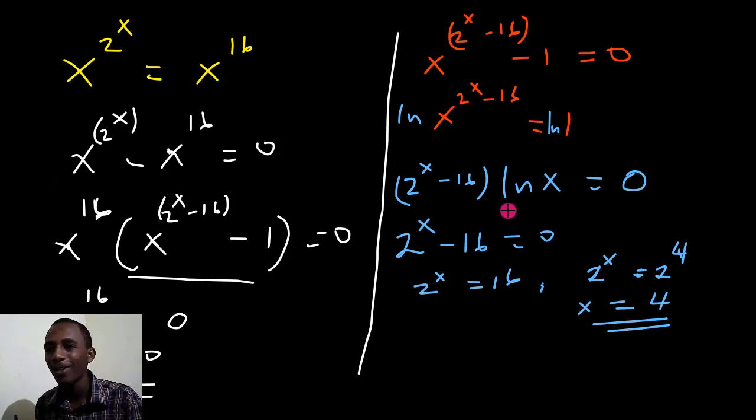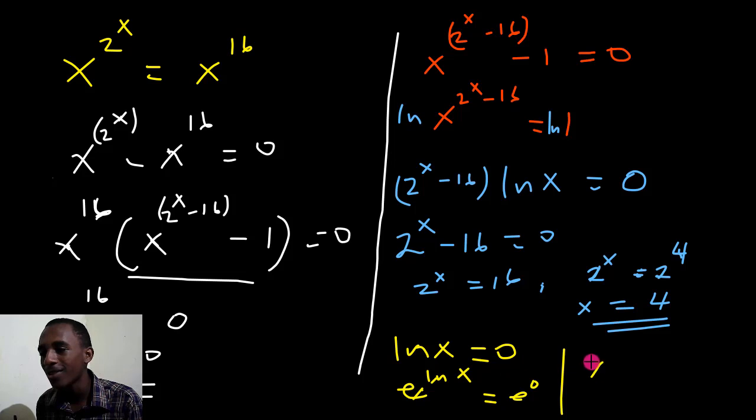And finally, we have also natural log of x equals 0. Write that in another color. Natural log of x equals 0. Okay, if you put exponents on both sides, exponent of natural log of x, exponent of 0, you'll actually have this cancel out with this. So x equals the exponent of 0 is 1.